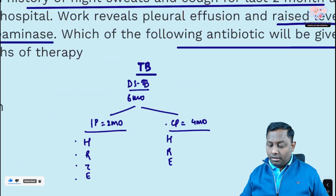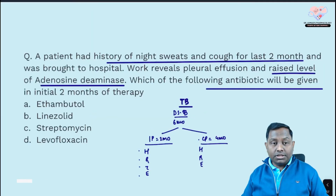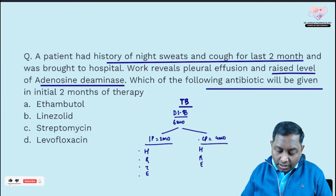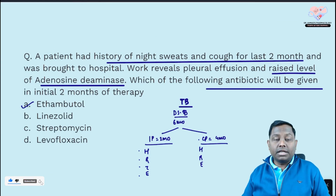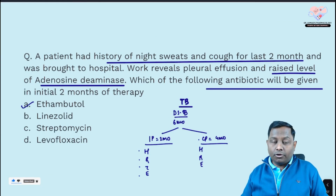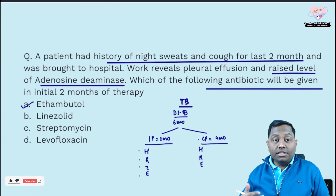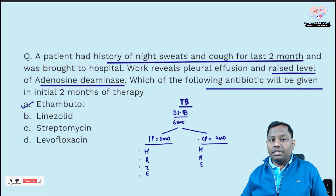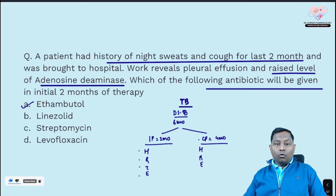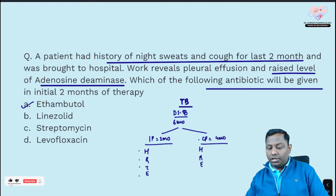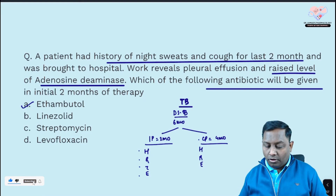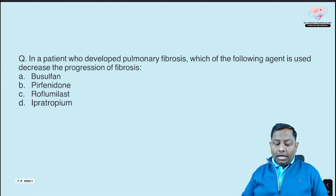For drug-resistant tuberculosis, we utilize streptomycin, which is a reserved drug. Linezolid and levofloxacin are Group B drugs used in drug-resistant TB. So for the initial two months as per the given question, the answer is ethambutol.